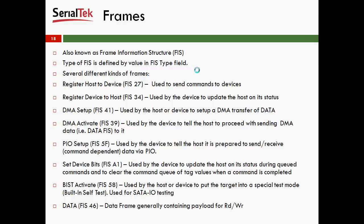The DMA Activate is used by the device to tell the host to proceed with sending DMA data, i.e., a data FIS to it. PIO Setup, which is a FIS-5F, is used by the device to tell the host it is prepared to send and receive data via PIO based on the command.